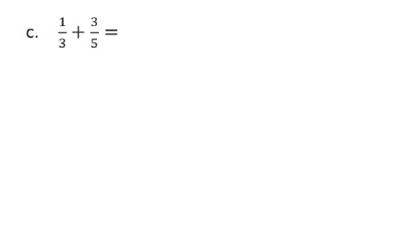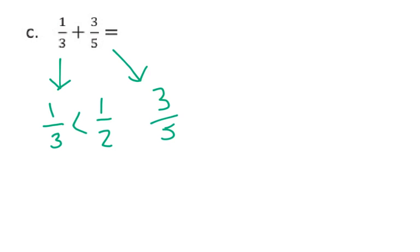We're going to take a look at our first problem, which is from the homework — number 1, letter C. We want students to think about this problem first. We have 1 third, and in their head they're thinking, well, 1 third is less than 1 half. And I know that 3 fifths is less than 1. So, my answer — the sum — is going to be less than 1 and 1 half. This is just so they have an idea of what a reasonable answer will be.